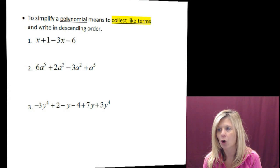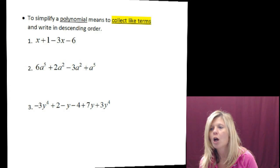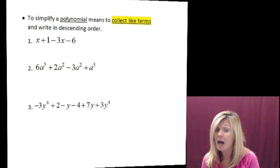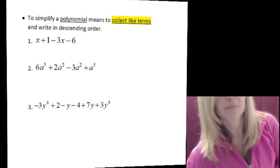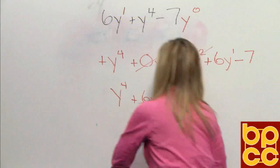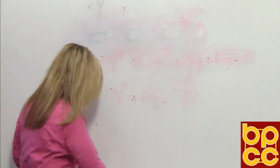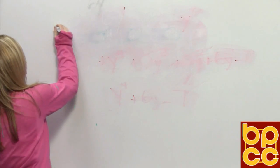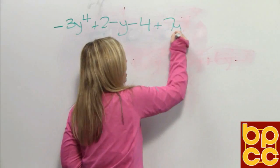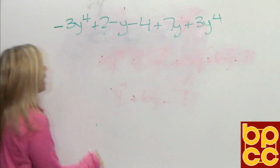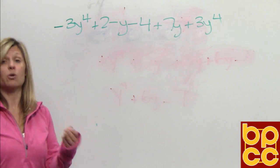Our next definition is called collect like terms. Collect means to put together — just like you have a collection of stamps or baseball cards at the house. You can only add things that are alike, and you can only subtract things that are alike. So we're going to look at example 3 in the notes. We have a polynomial — poly means many pieces. We have negative 3y to the 4th plus 2 minus 4 plus 7y plus 3y to the 4th. That is 6 monomials, so anything with 4 or more terms is called a polynomial.